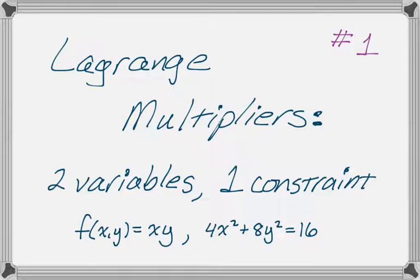In this video we are going to talk about Lagrange multipliers. We'll have a two-variable, one-constraint scenario. So it'll be f(x,y) = xy, and then our constraint will be 4x² + 8y² = 16.